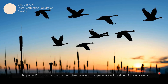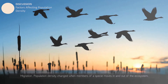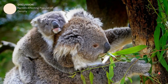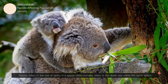The first factor that can lead to a lower population density is migration. Population density changes when members of a species move in or out of an ecosystem. For example, when birds fly in to a place, the population density of their species in that area increases. When they leave, the population density decreases.